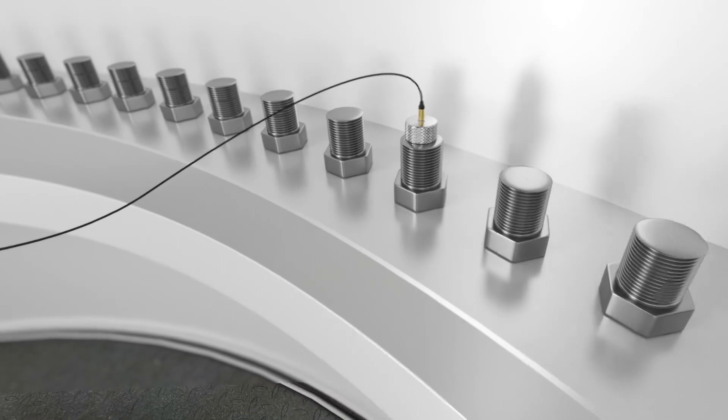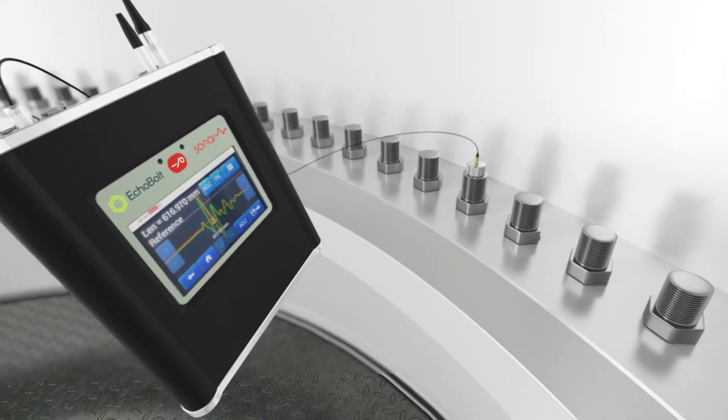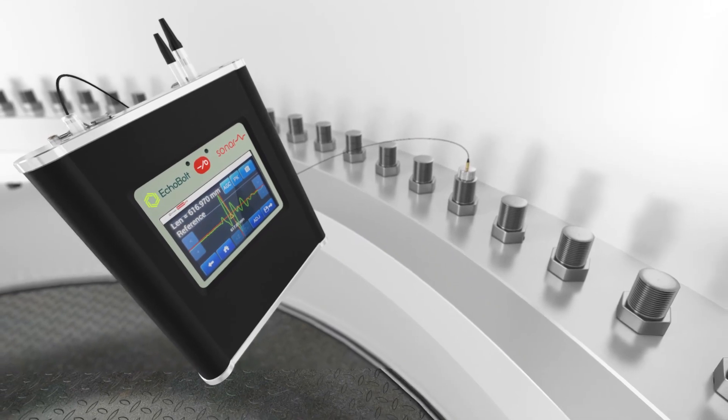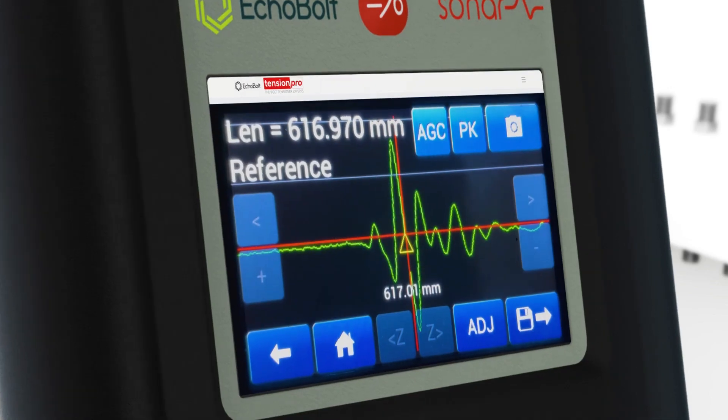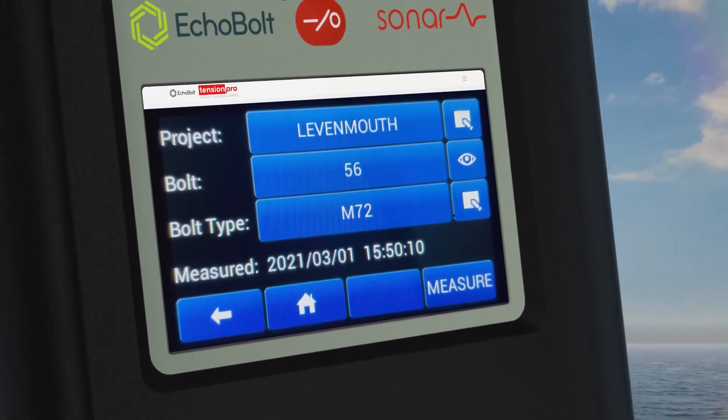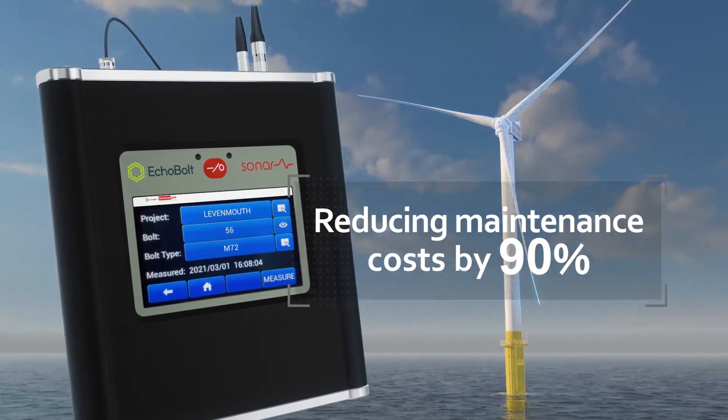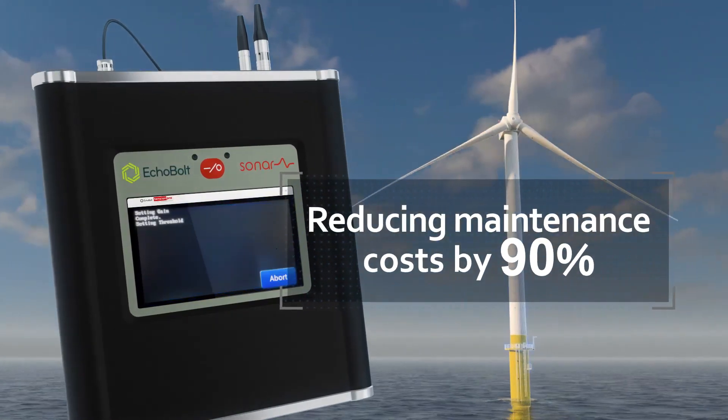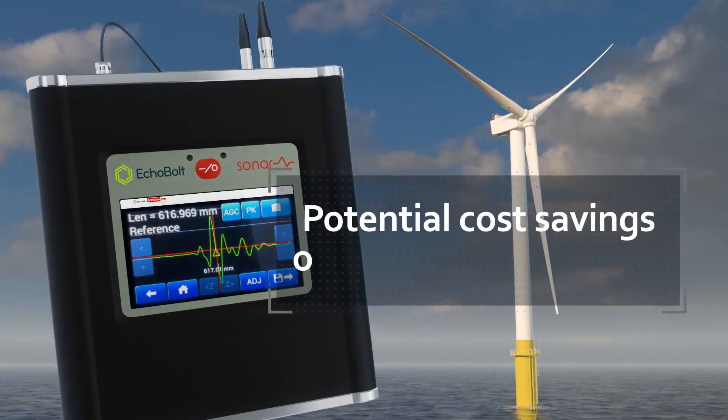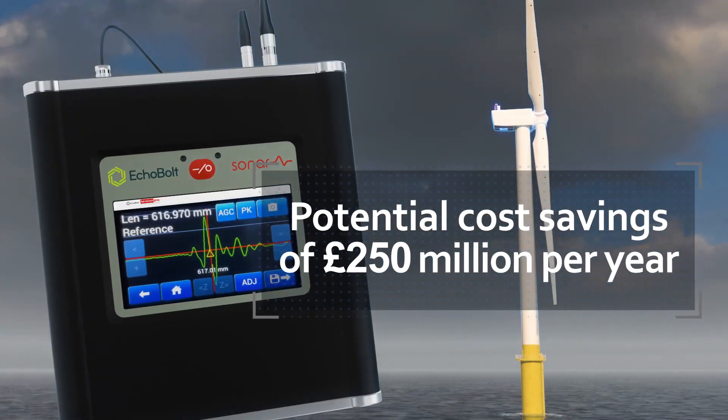Echobolt provides quick and precise measurements to give wind farm operators an accurate view of bolt condition and any degradation over time. This technology has proven it can reduce the costs associated with bolt maintenance by up to 90 percent, with a potential cost saving for the European wind industry estimated at 250 million pounds per year.